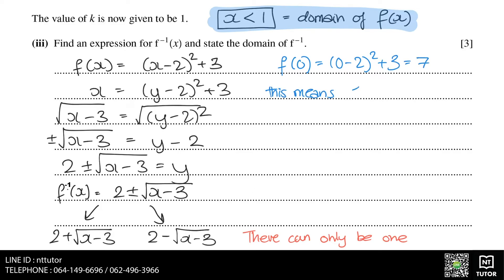This means that if we substitute 7 into the inverse function, it should give us 0. When we substitute 7 into the first version of the inverse function, which is 2 plus the square root of (x - 3), it gives us 4, which is not equal to 0. Therefore, this version does not work.